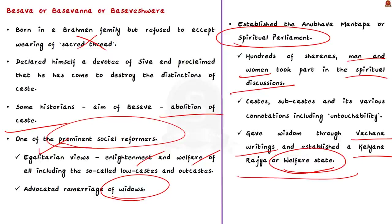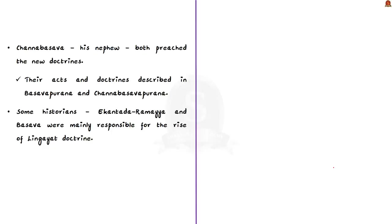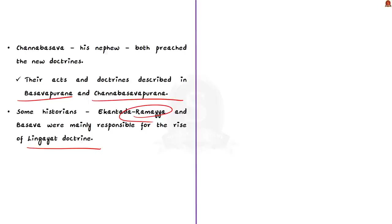Similar to Basavana, there was another reformer called Chana Basava, his nephew. Both preached new doctrines, and their acts are described in two Puranas: Basava Purana and Chana Basava Purana. Another important reformer, Ramaya, was a contemporary of Basava. It is believed both Basava and Ramaya were mainly responsible for the rise of Lingayat doctrine. Basava and his Lingayats aimed to establish a homogeneous community composed of all greats and castes. But after his death, the community gradually drifted into the caste system. Now Lingayats are known not as a religious sect but as a caste sect — a cruel irony.